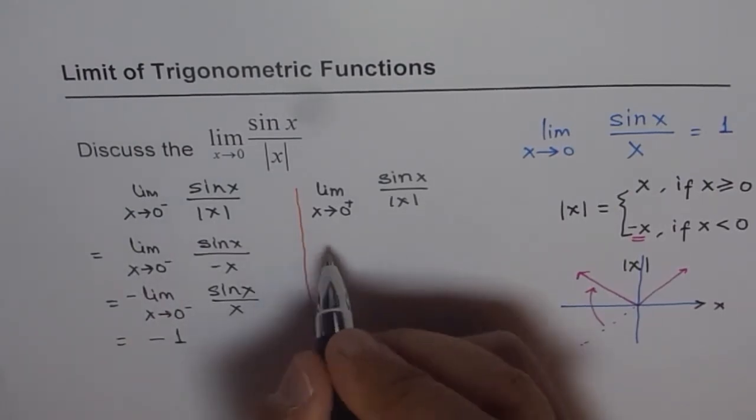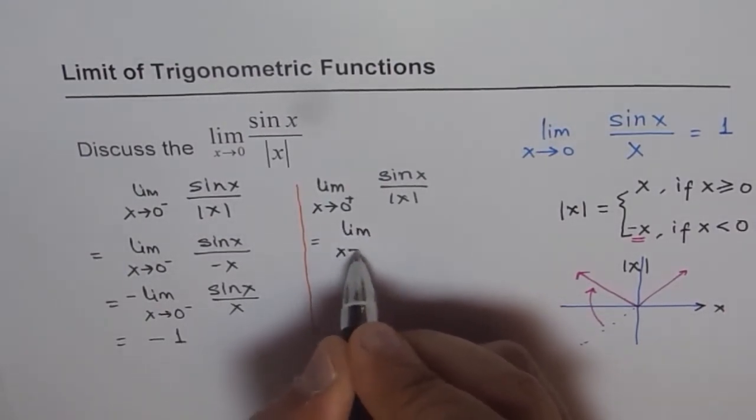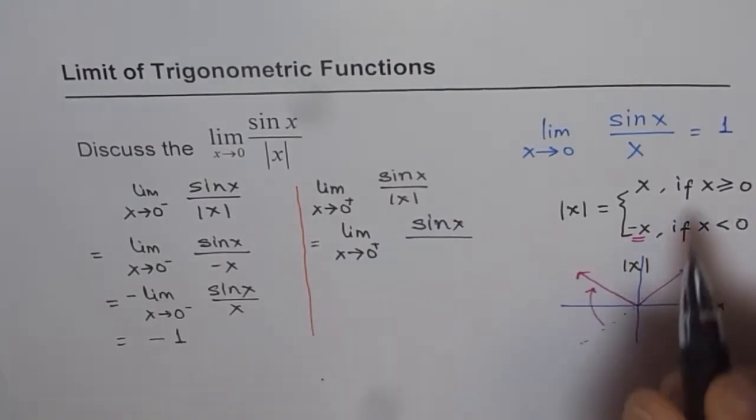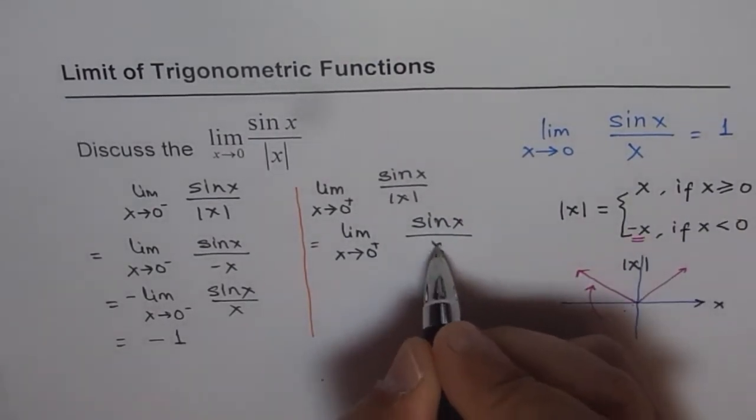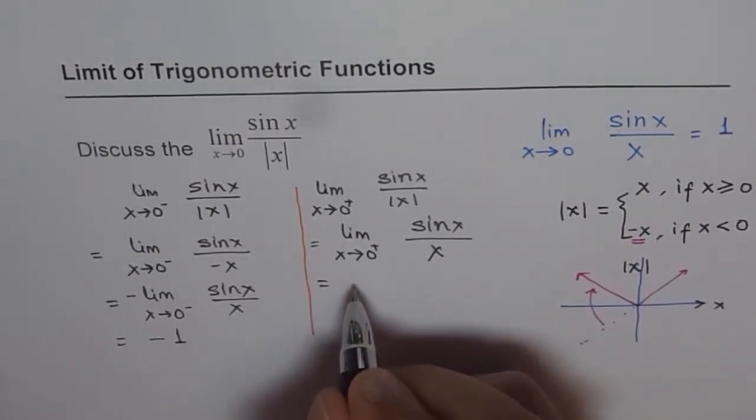How about from the right side? From the right side, it is limit x approaches 0, right side. We can write this as sin x over. If x is greater than or equal to 0, it is only x, not minus x. That makes huge difference. That makes huge difference. That we know is 1.